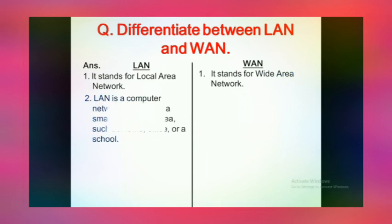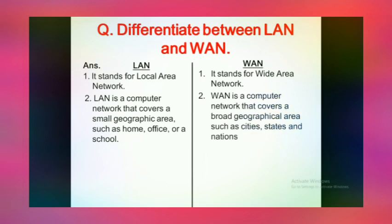The second point in LAN is: LAN is a computer network that covers a small geographic area such as a home, office, or a school. We connect our computers within a building, a home, or an office — that network is called LAN. The second point in WAN is: WAN is a computer network that covers a broad geographical area such as cities, states, and nations. We can connect one computer in India with another computer in America using WAN.